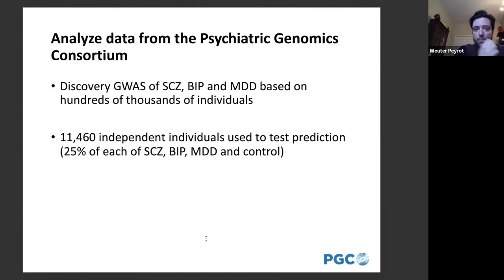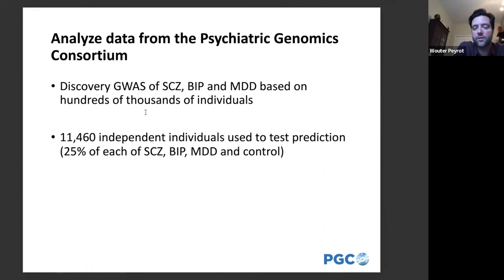We analyzed data from the Psychiatric Genomics Consortium — a very large international consortium integrating efforts from thousands of researchers across all continents. We used discovery GWAS results to construct polygenic risk scores for schizophrenia, bipolar disorder, and depression based on hundreds of thousands of individuals, and we had an out-of-sample test set of almost 12,000 individuals to evaluate the prediction results of DDX-PRS.